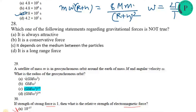The next question asks which statement about gravitational force is NOT true. Gravitational force is always attractive — true. It is a conservative force — true. It is a long-range force — true. The false statement is that it depends on the medium between the particles, because gravitational force does not depend on the medium.